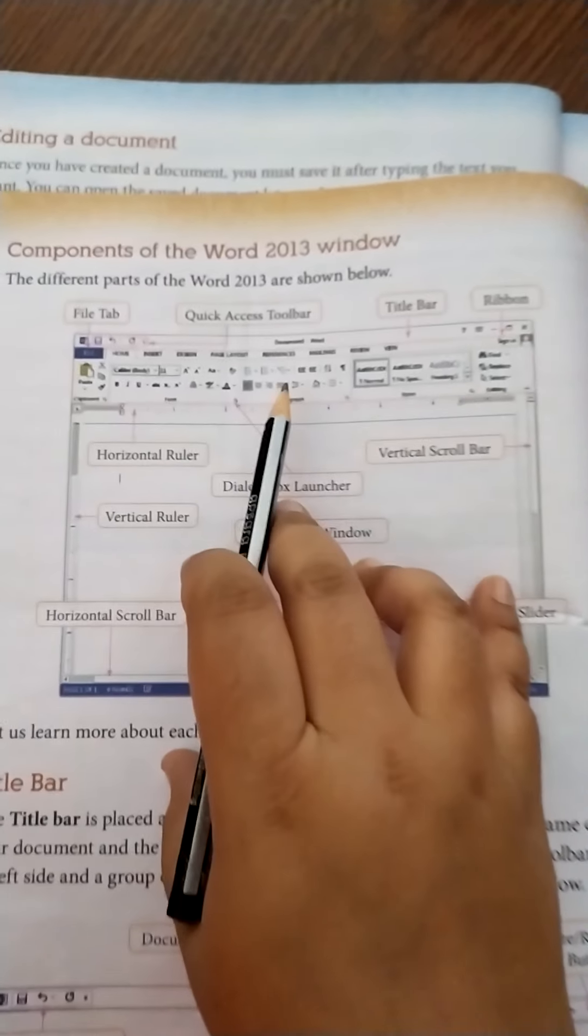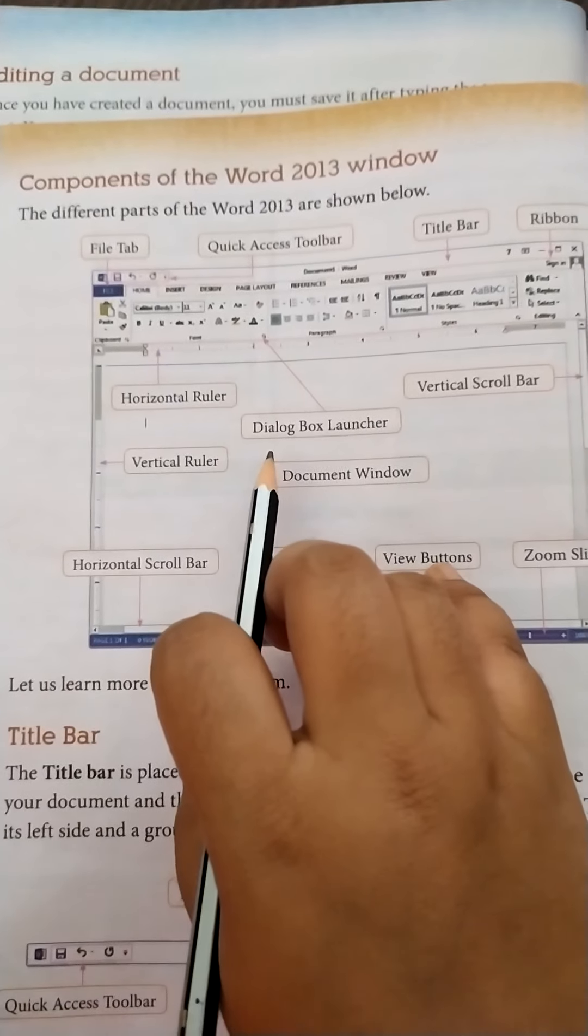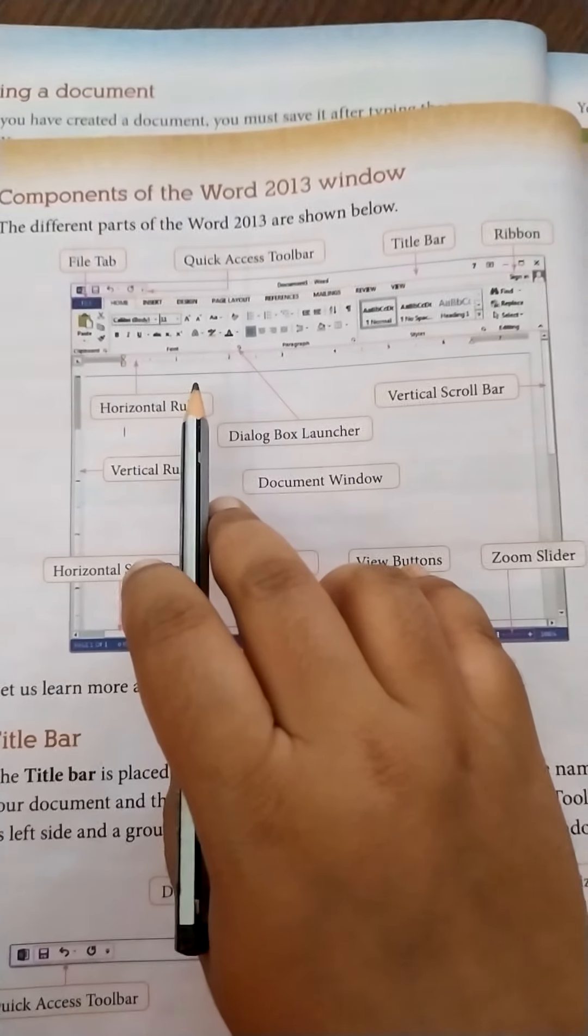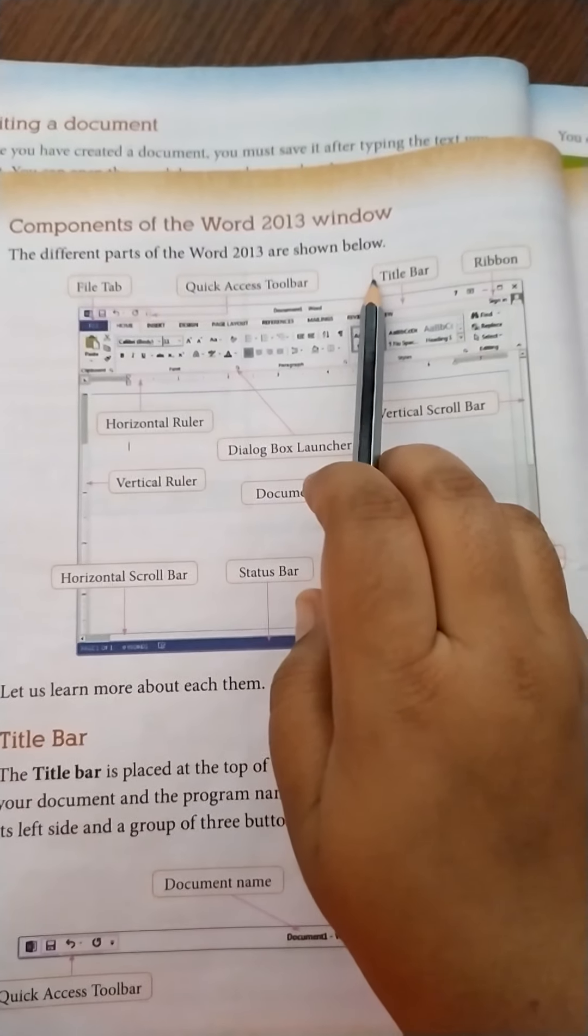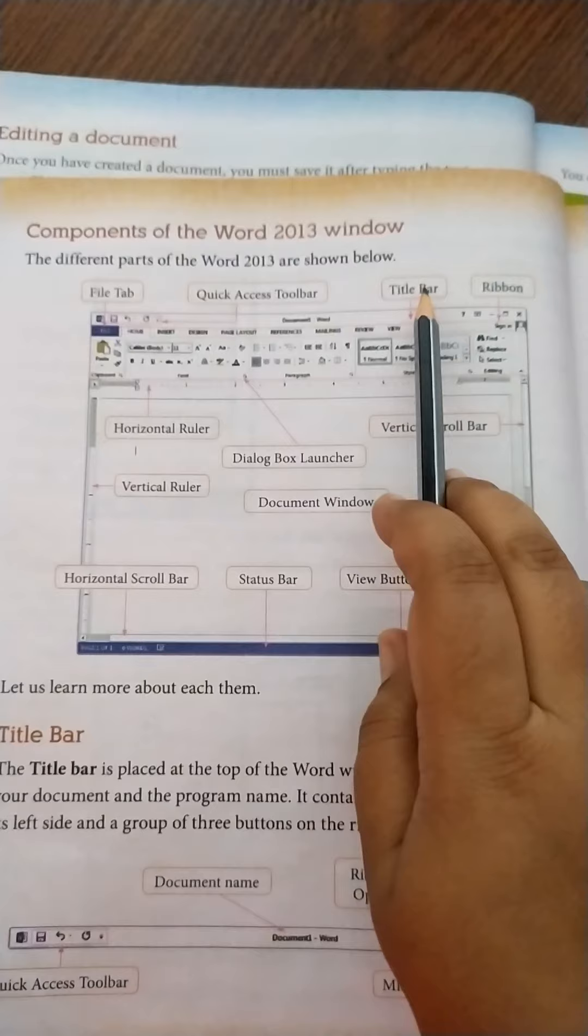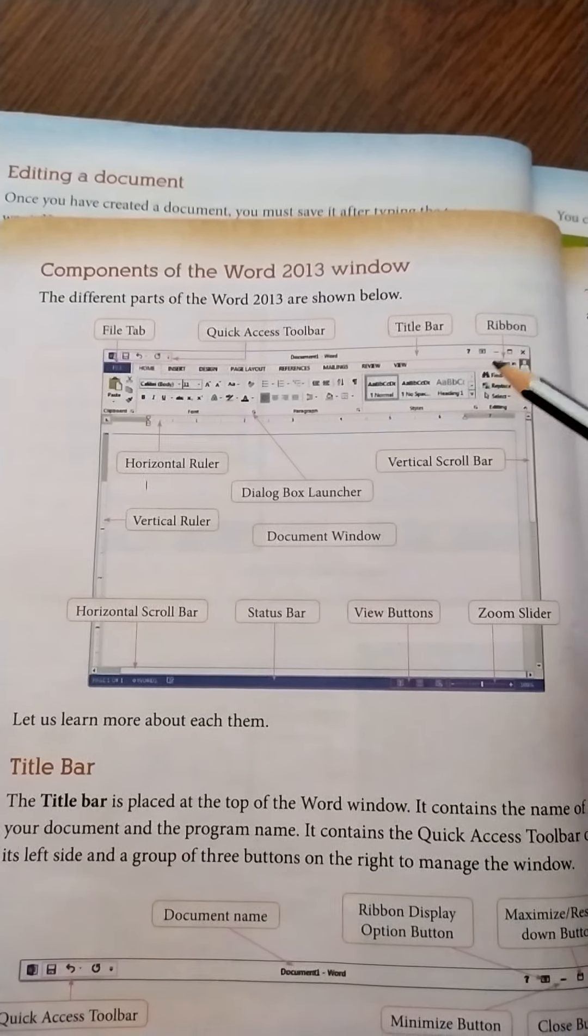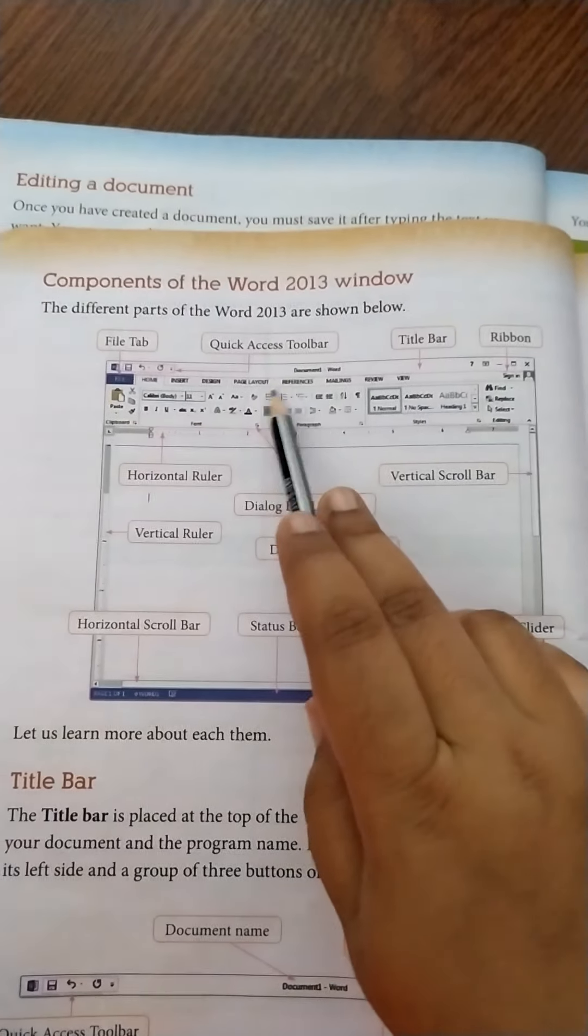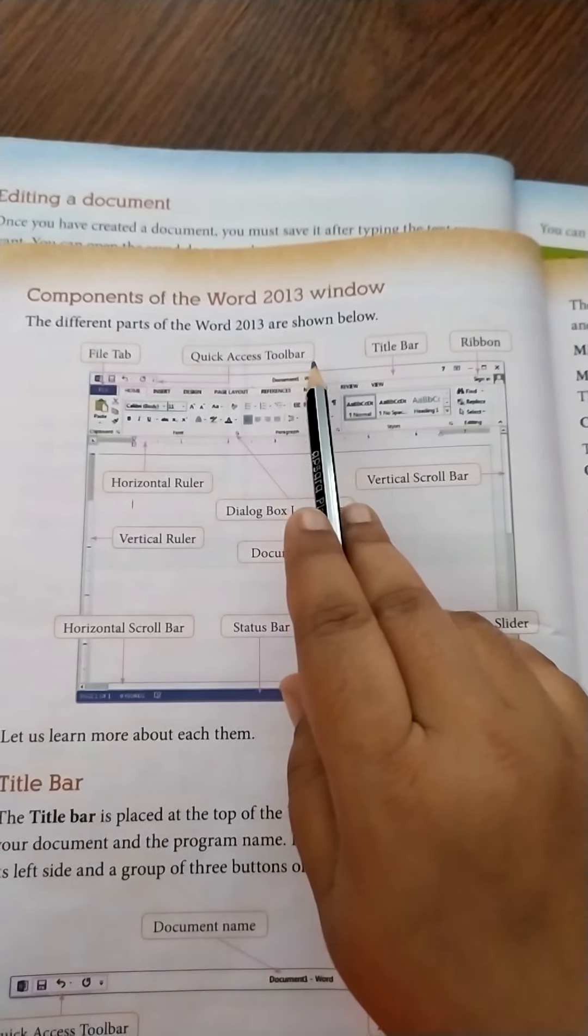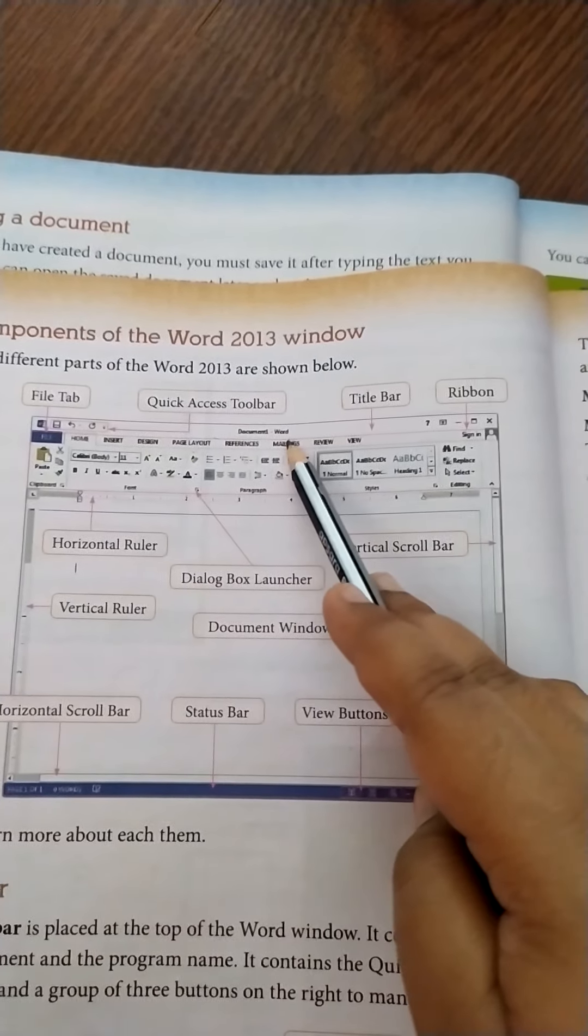Now this is the component that I have already explained to you. Today I will explain each and every component. First starting with the title bar. Title bar is placed at the top of the window. The topmost line is called the title bar. It consists of the name of the document along with the program name.